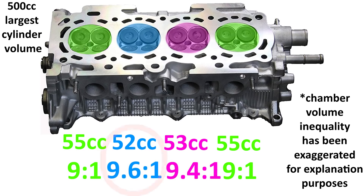This means that cylinder 2 will have the best performance, but it will also be the most likely to start knocking first. If it knocks and you don't have cylinder-selective knock control, this cylinder will constrain the performance of all the other cylinders. But even with cylinder-selective knock control, starting to knock sooner than the other cylinders is wasted performance potential. The optimal scenario for any engine is to always have equal performance from all of its cylinders.